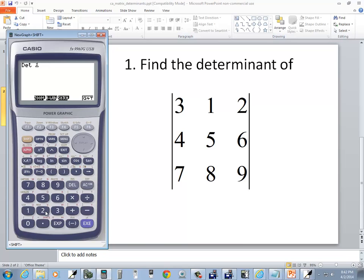So we'll do shift 2, and it'll put MAT on here. Well, then we're going to put A. So I'll do my alpha and then the X. And that puts my A. And then I push EXE. And it tells me my determinant is negative 9, which is our answer.